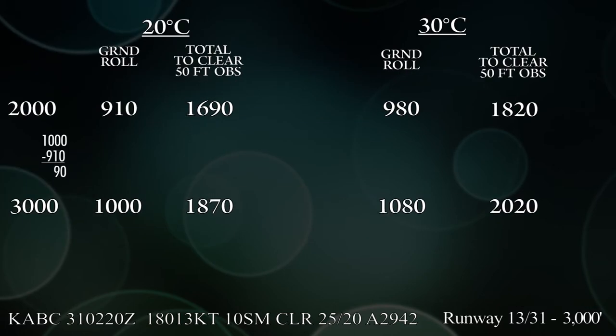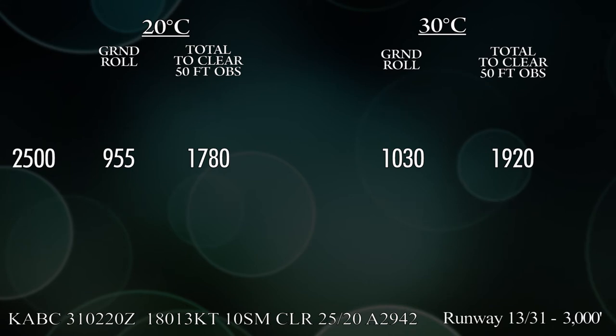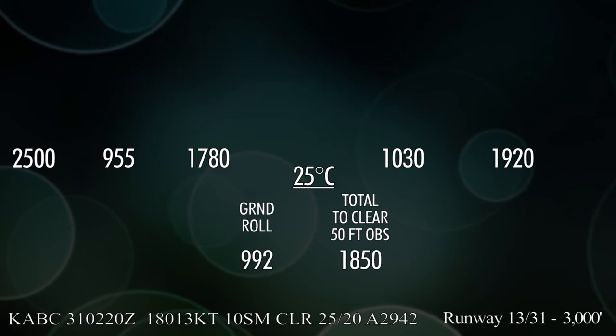To get your number, you do a little bit of math and there we go, look at that. For the ground roll at 2,500 feet, you have 955 and for the 50-foot obstacle, you have 1,780. Then for 30 degrees, you have 1,030 and then you also have 1,920. So now we have our numbers for 2,500 feet, we just don't have them for 25 degrees Celsius. So we'll go ahead and interpolate for that as well. And you get 992 for the ground roll and 1,850 for your total to clear a 50-foot obstacle.